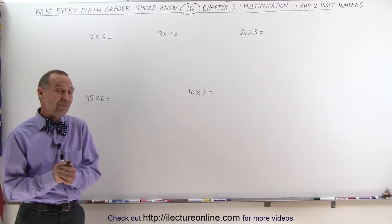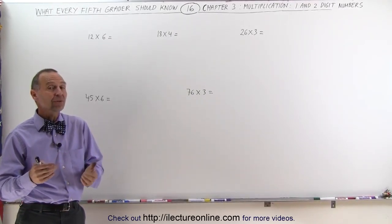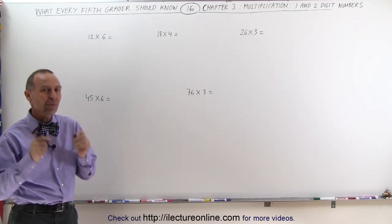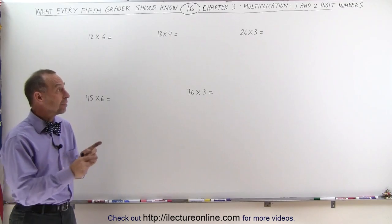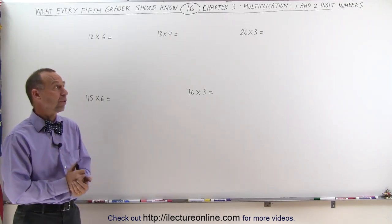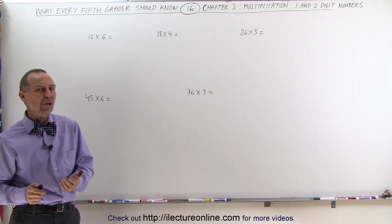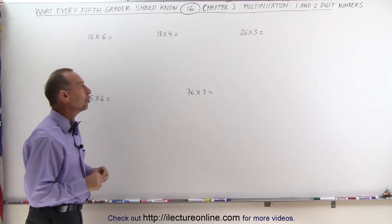Welcome to ElectronLine. Now that we've memorized our multiplication tables, we're ready to start utilizing that knowledge to solve these types of problems. So what we're going to do now is multiply a two-digit number with a one-digit number. There are some tricks to that, so let's see what we can do.